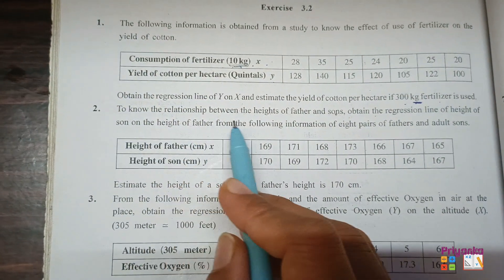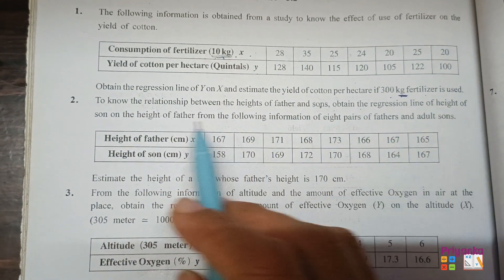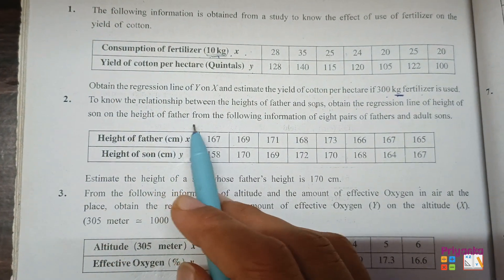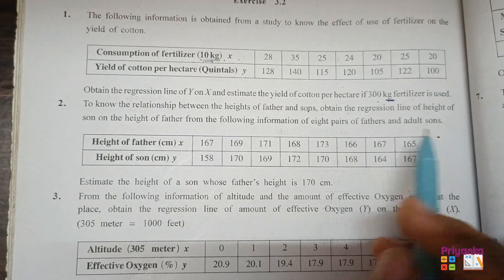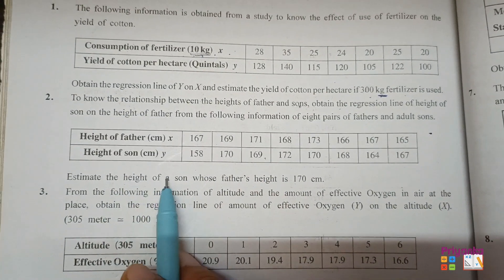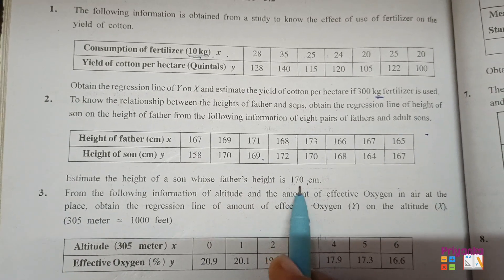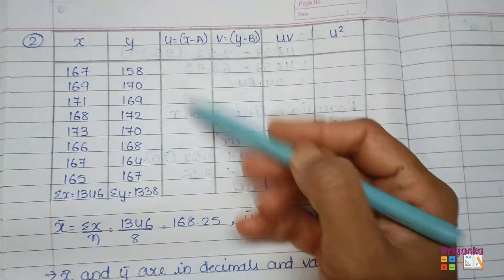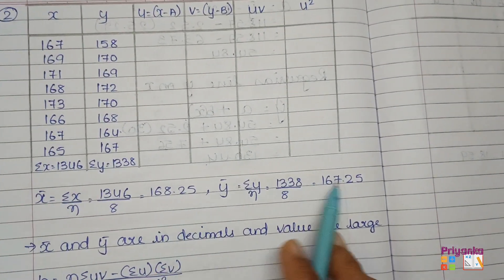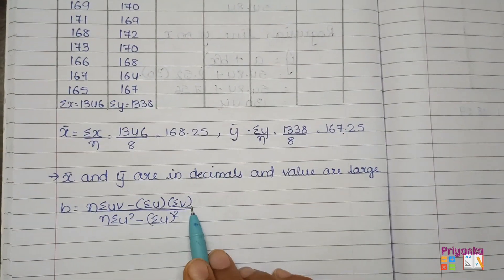Moving to the next question: to know the relationship between the height of a father and son, obtain the regression line of height of son on height of father from the following information of 8 pairs of father and adult son, and estimate the height of son whose father's height is 170 cm. Taking the information into the table, the values are large and in decimals, so we will use the shortcut UV method.